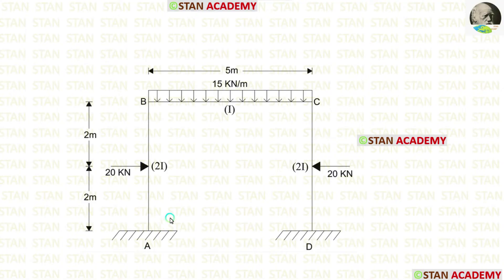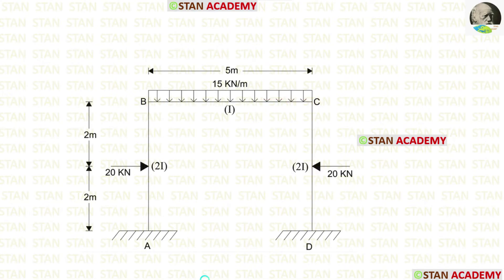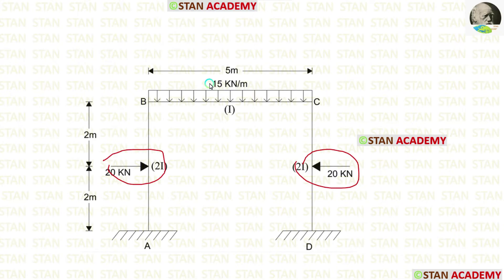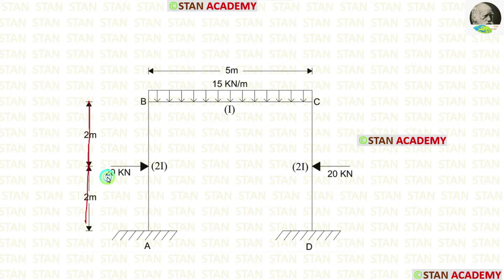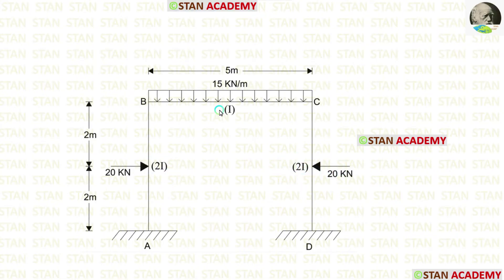In this frame there are two columns, column AB and column DC, and there is a beam BC. This frame is symmetrical in dimensions and the loading is also symmetrical, so this is a non-sway type frame. The columns carry point loads at their centers, and the beam carries a uniformly distributed load acting over the full span. The length of the columns is 4 meters and the length of the beam is 5 meters. The moment of inertia for the columns is 2I and for the beam it is I.